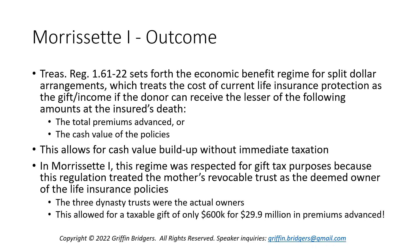In Morissette 1, this regime was respected for gift tax purposes because of one key fact: the Treasury Regulation treats the Mother's Revocable Trust — the party advancing the premiums — as the deemed owner of the life insurance policies. Because of this, the $30 million in cash value wasn't gifted away. Instead, only the cost of current life insurance protection was gifted to the three dynasty trusts. This allowed for a huge gift tax savings — there was only a taxable gift of $600,000 for close to $30 million in premiums that had been advanced.